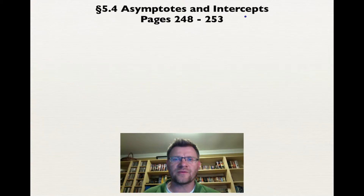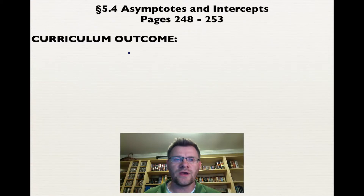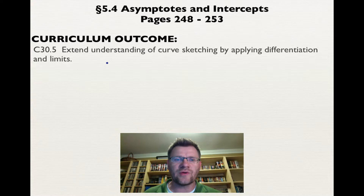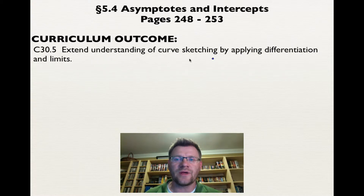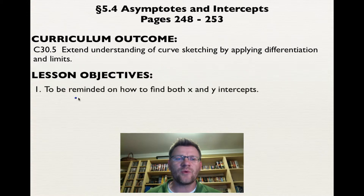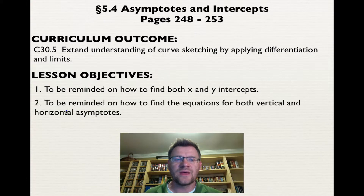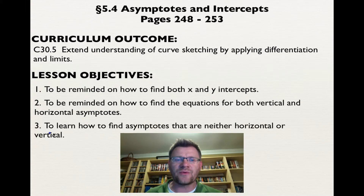Section 5.4 is asymptotes and intercepts, on pages 248 to 253. Our curriculum outcome is 30.5: to extend understanding of curve sketching by applying differentiation and limits. Our lesson objectives are: number one, to be reminded how to find both x and y intercepts; number two, to be reminded how to find equations for both vertical and horizontal asymptotes; and number three, to learn how to find asymptotes that are neither horizontal nor vertical.